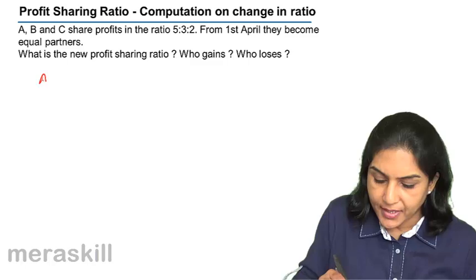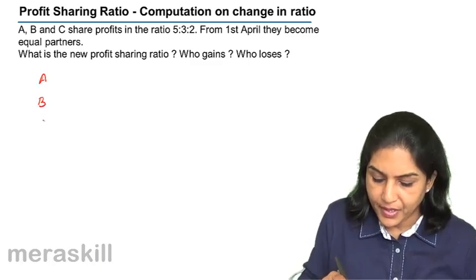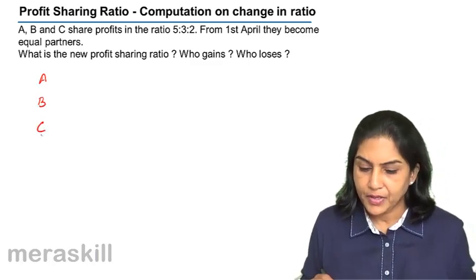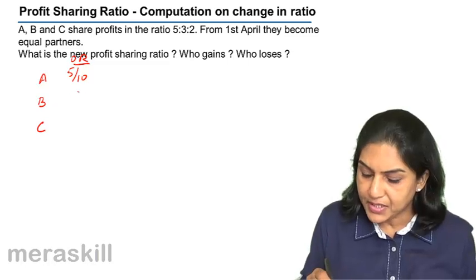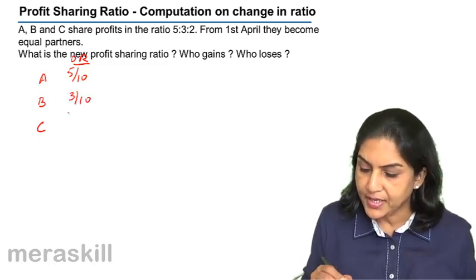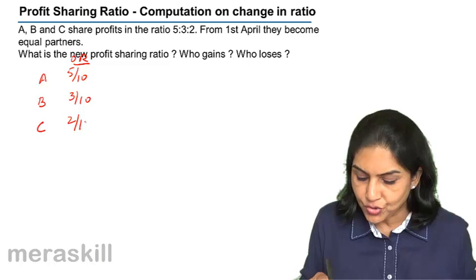So let us take A, B, and C. What was the old ratio? Old ratio is 5 by 10. In B's case, it is 3 by 10. And in C's case, it is 2 by 10.